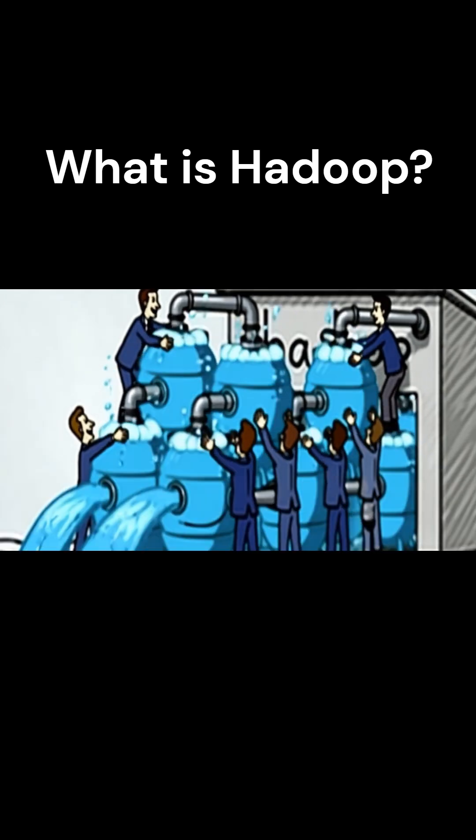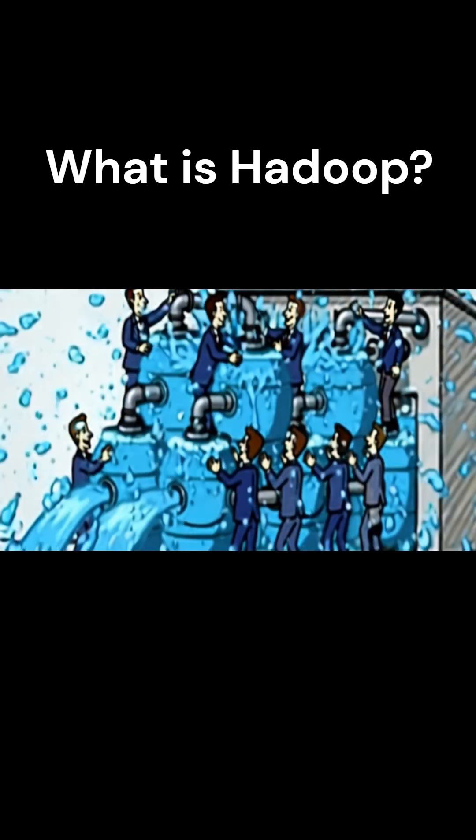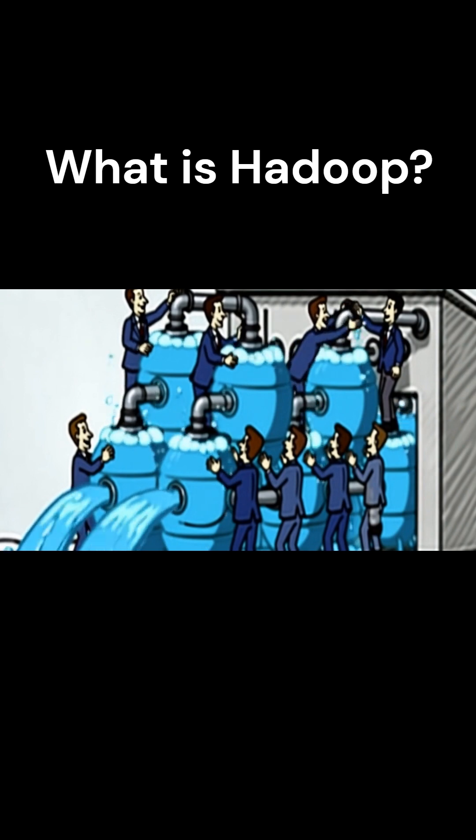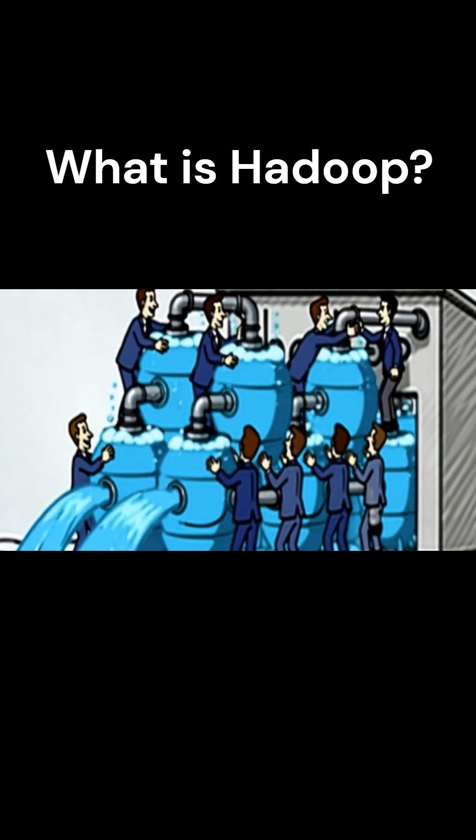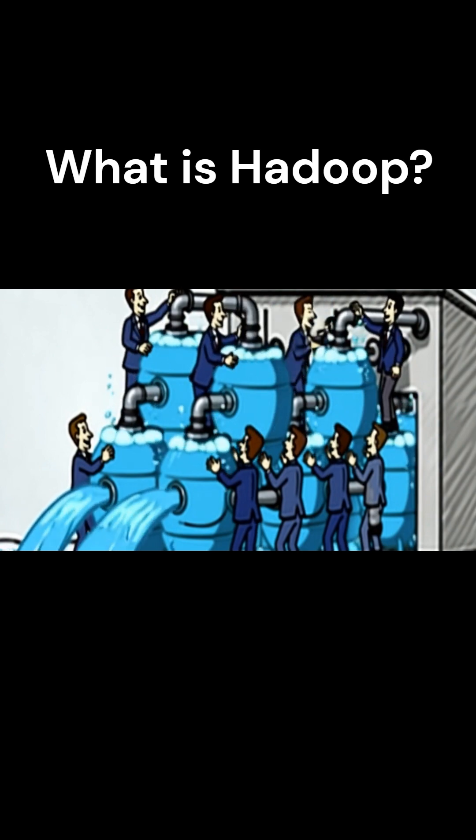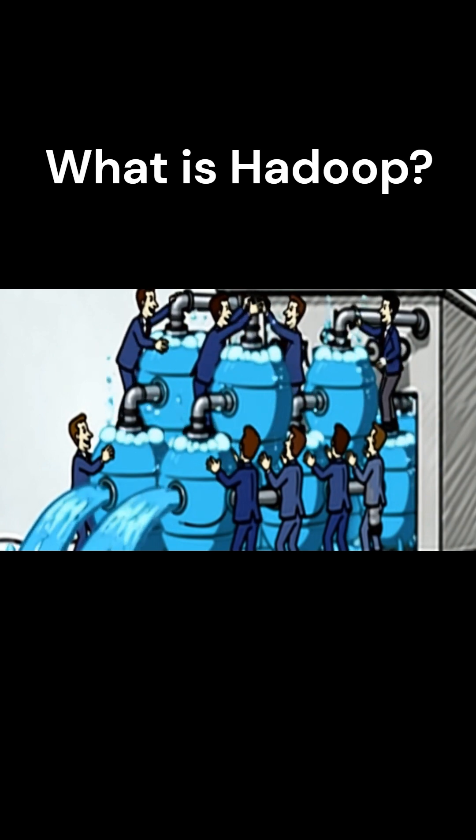It keeps extra copies, so if one of the machines dies, we don't panic. Nothing is lost. Plus, since the data is already spread out, we can process everything in parallel across many machines.